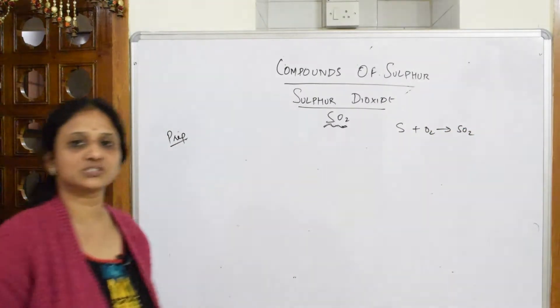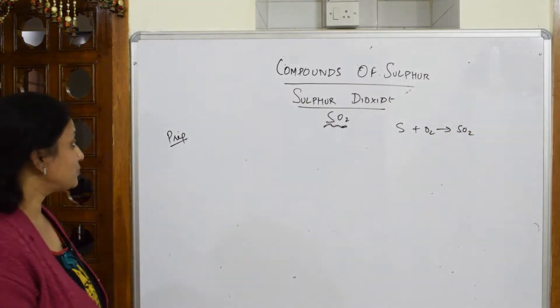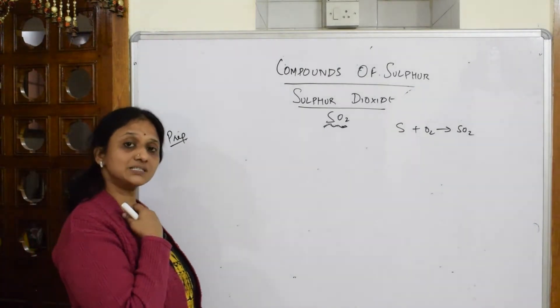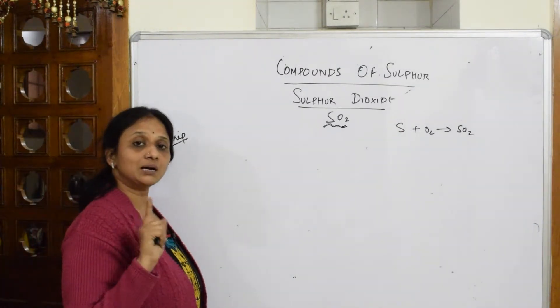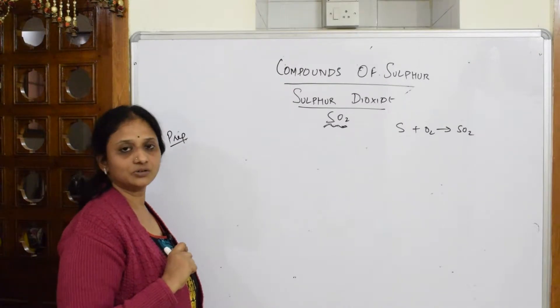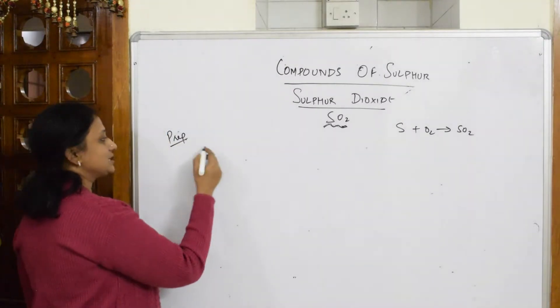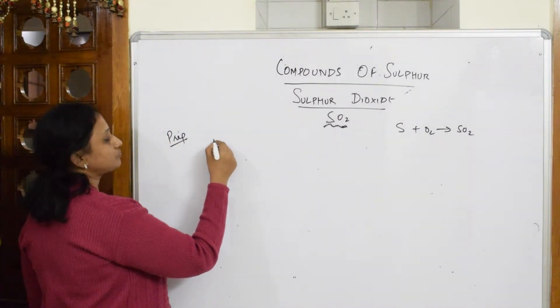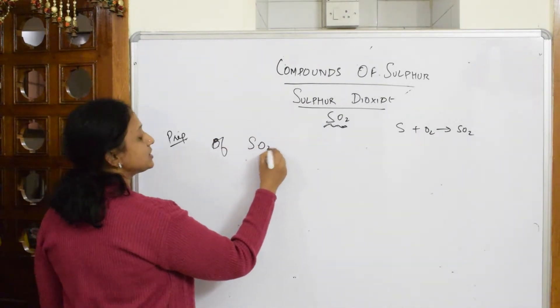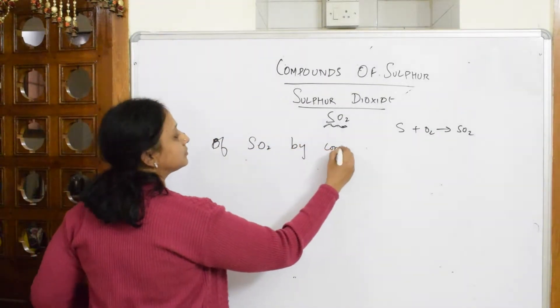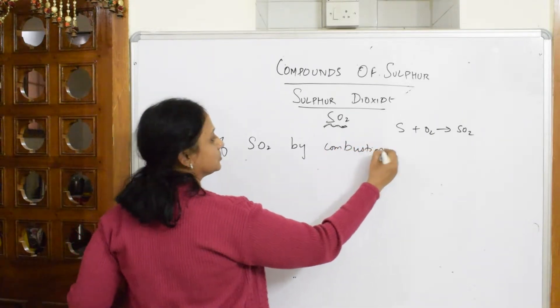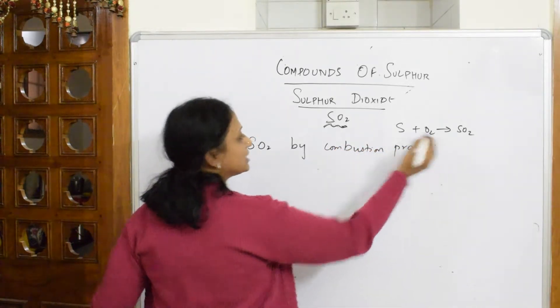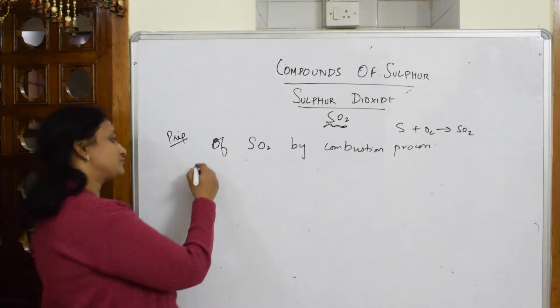Suppose if they ask you how is sulfur prepared by combustion of iron pyrites, or this is the ore. Let us write what did I say: preparation of sulfur dioxide by combustion process. First of all, I have to know what is a combustion process.